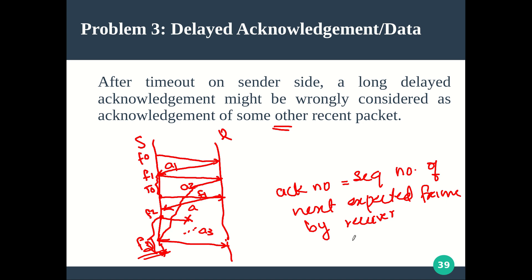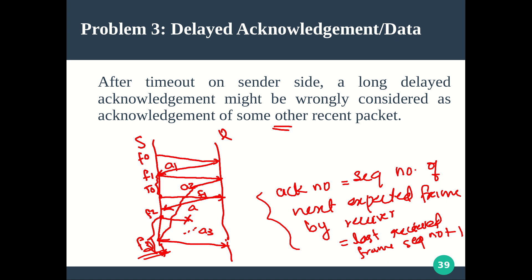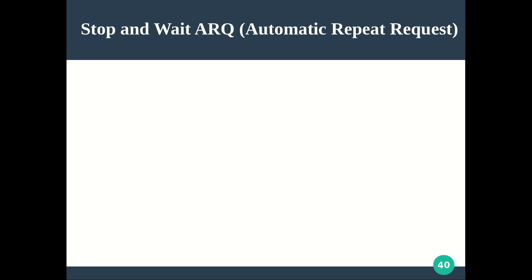The acknowledgement number is the sequence number of the last received frame plus one. So we have now seen three different types of problems: data lost, acknowledgement lost, and acknowledgement delayed. The first was solved by introducing the timeout timer, the second by introducing the sequence number, and the third by introducing the acknowledgement number.